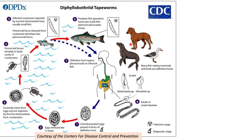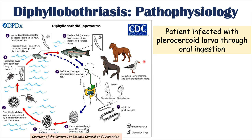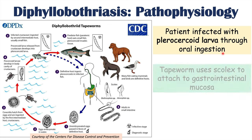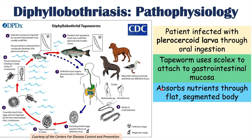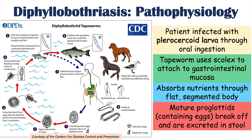A human or other definitive host then eats the infected fish, and the plerocercoid larva develops into an adult tapeworm. In summary, infection occurs through oral ingestion of raw or undercooked fish containing the plerocercoid larval stage. The adult tapeworm uses its scolex — the head of the tapeworm — to attach to the gastrointestinal mucosa, or inner lining of the small intestine. It then absorbs nutrients through its flat segmented body. These segments are known as proglottids, which mature, contain eggs, and break off to be excreted in the stool.